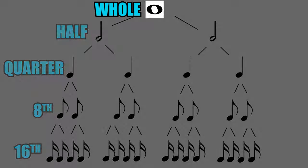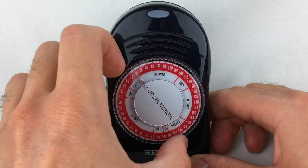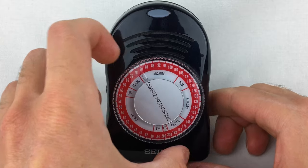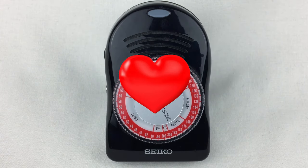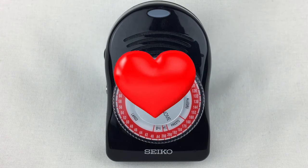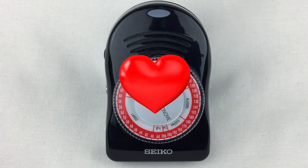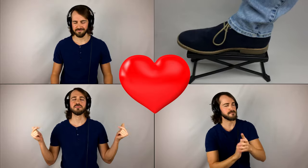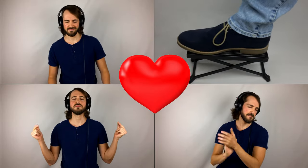Whole notes have a value of four beats. What's a beat? Well, remember our metronome? Every time you hear a click, that's a beat — it's the music's heartbeat. When you see people bobbing their head or tapping their foot to the music, they're keeping the beat.